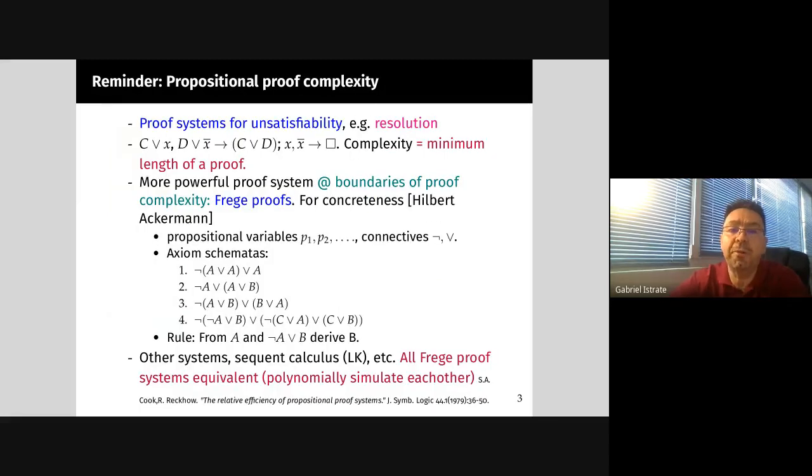The starting point is propositional proof complexity. We're talking about unsatisfiable formulas and we want to prove they're unsatisfiable. Of course, you can do that by resolution and talk about the complexity of such a proof, which is the minimum length of a proof. Resolution is quite limited. Proof complexity has concentrated on some more powerful proof systems, including some for which we don't know how to prove exponential lower bounds.